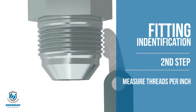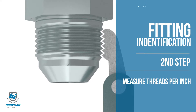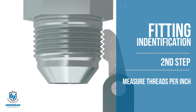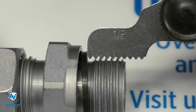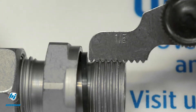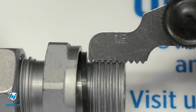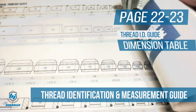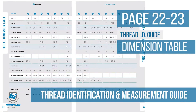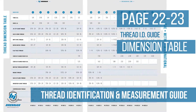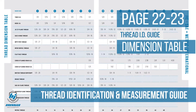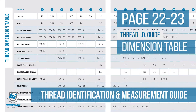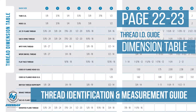Next, use a thread pitch gauge to identify the number of threads per inch. Place the gauge on the threads until it fits snugly. In our thread identification and measurement guide you'll find a chart in the back where you can match your measurements.